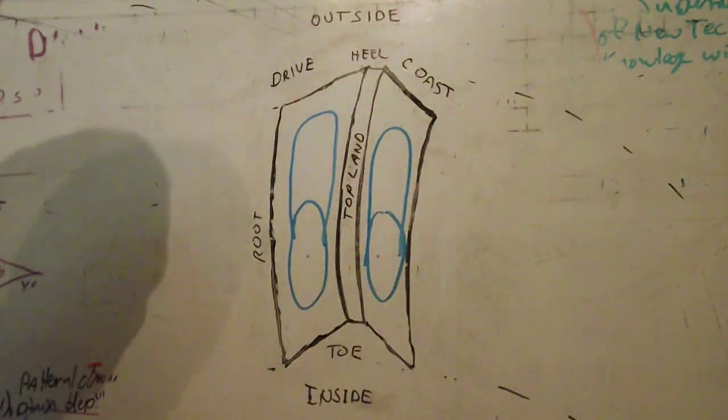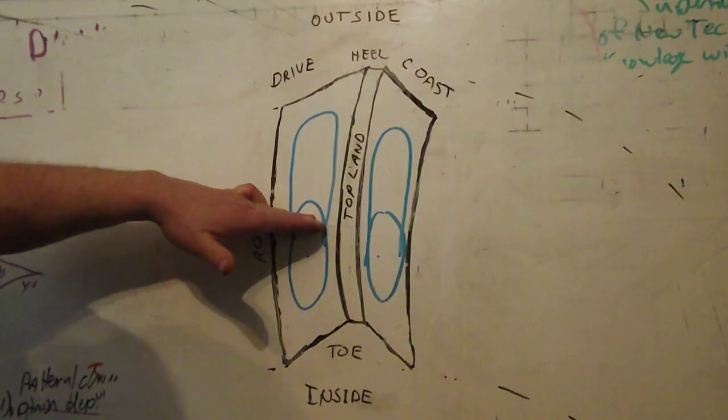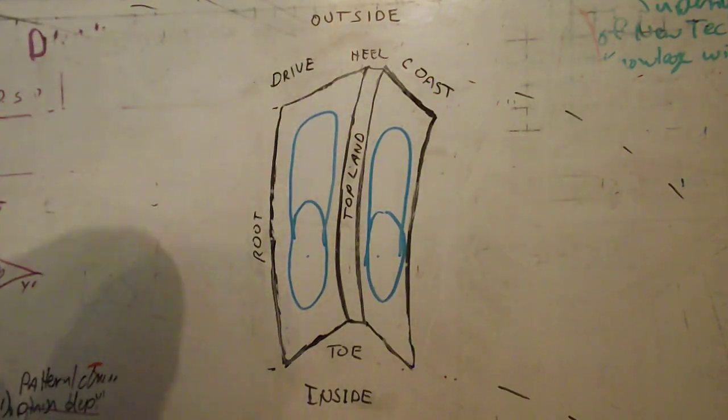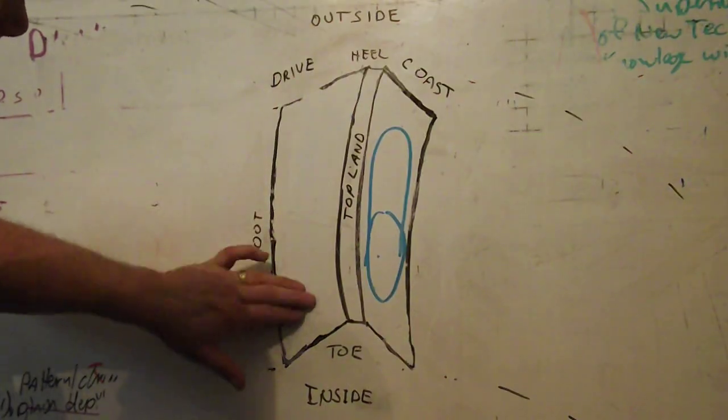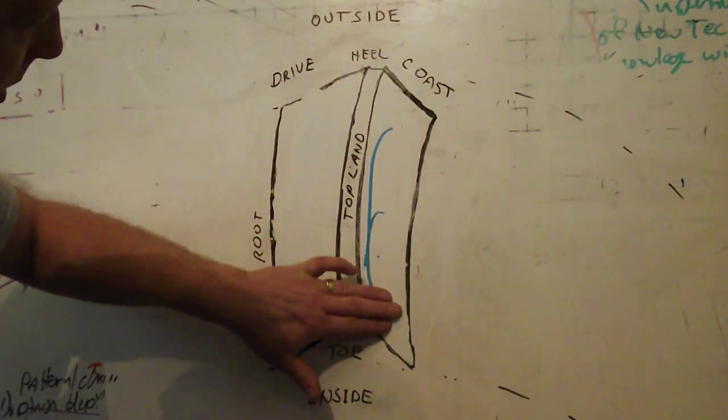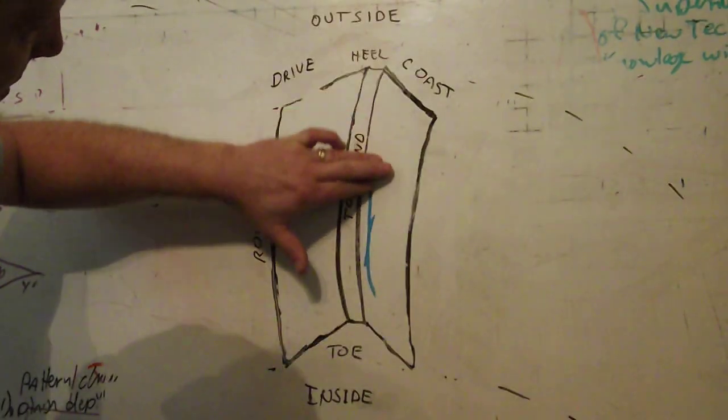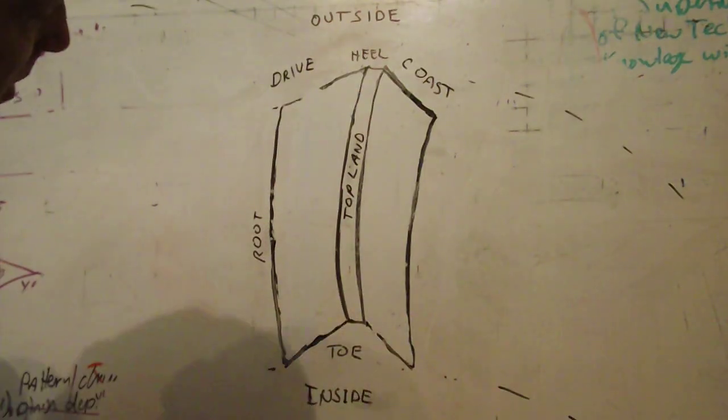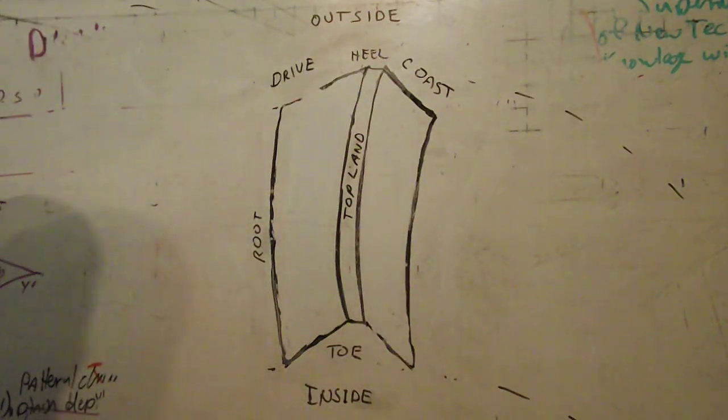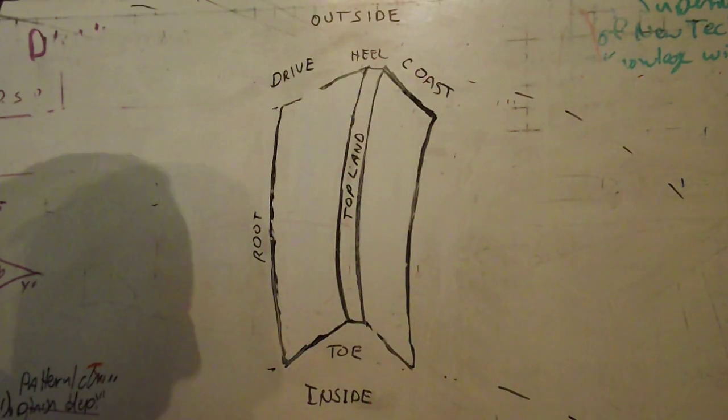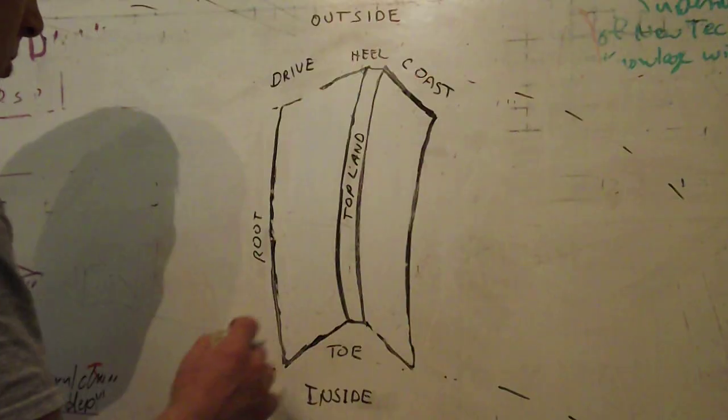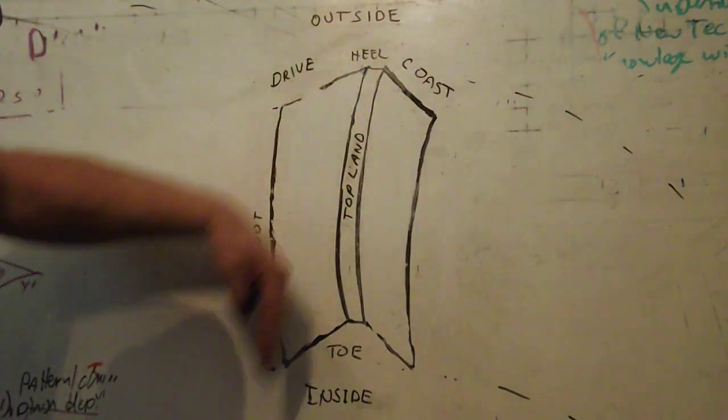When you put pressure on, that pattern is going to crawl right up the tooth. You don't want to start in the middle because it's going to crawl all the way off the side. When you're setting up your ring and pinion, they'll show you all kinds of different patterns and tell you which way to move it. I want to explain how the pattern moves in relationship to each adjustment.